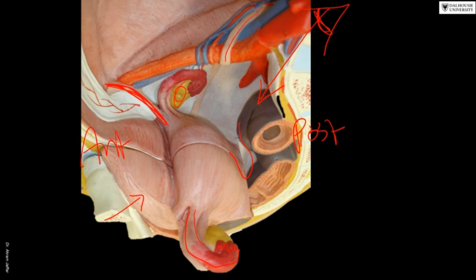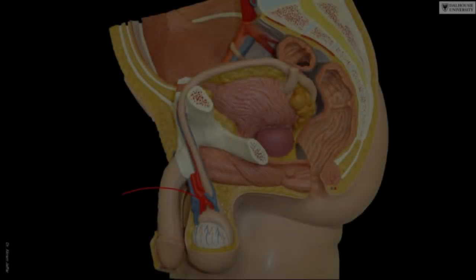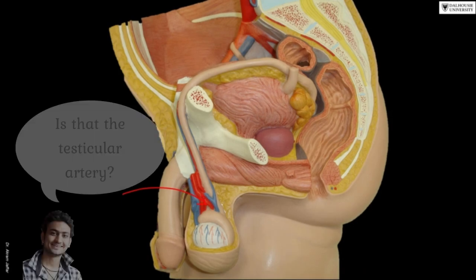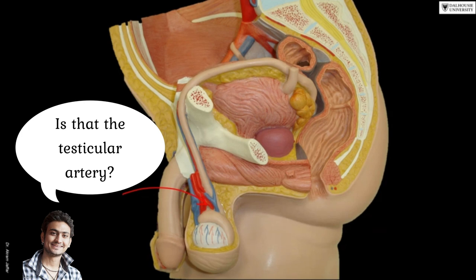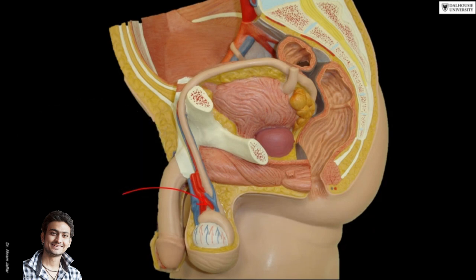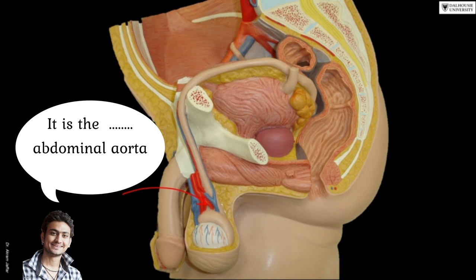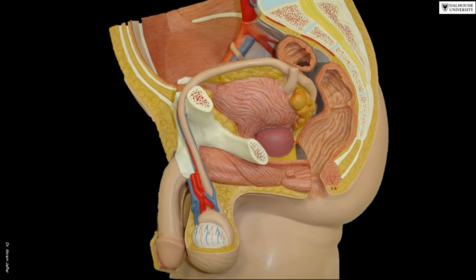The ureter crosses the bifurcation of the common iliac artery. This artery here is the testicular artery, originating from the abdominal aorta. Together with a group of veins, the vas deferens, nerves, and surrounding coats of fibrous tissue and muscle fibers, these structures form what we call the spermatic cord.